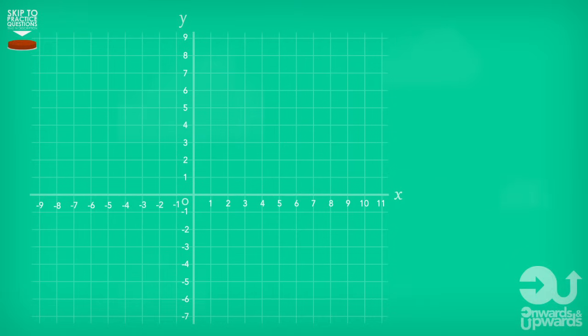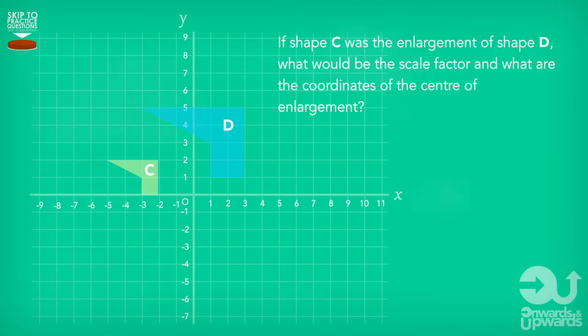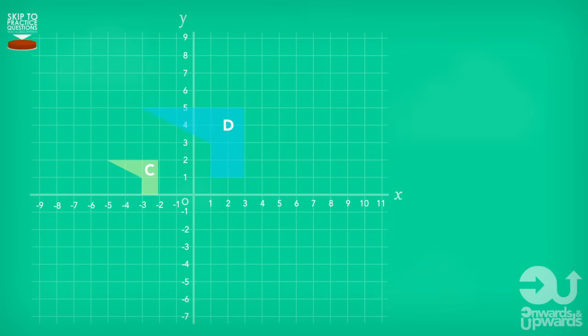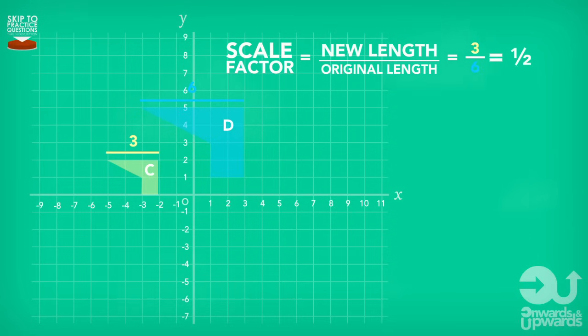Now, what if the enlarged shape was smaller or shrunken? What would the scale factor be? Well, here we just follow the same rules as before. We take the corresponding new length and we divide it by the same original length. For example, if shape C was an enlargement of shape D, what would be the scale factor and what are the coordinates of the centre of enlargement? Just like the previous example, we choose and divide a length from the new shape by the corresponding original length. In this case, it's three divided by six. If we leave this answer in fraction form and then simplify, we can see that our scale factor is one over two.